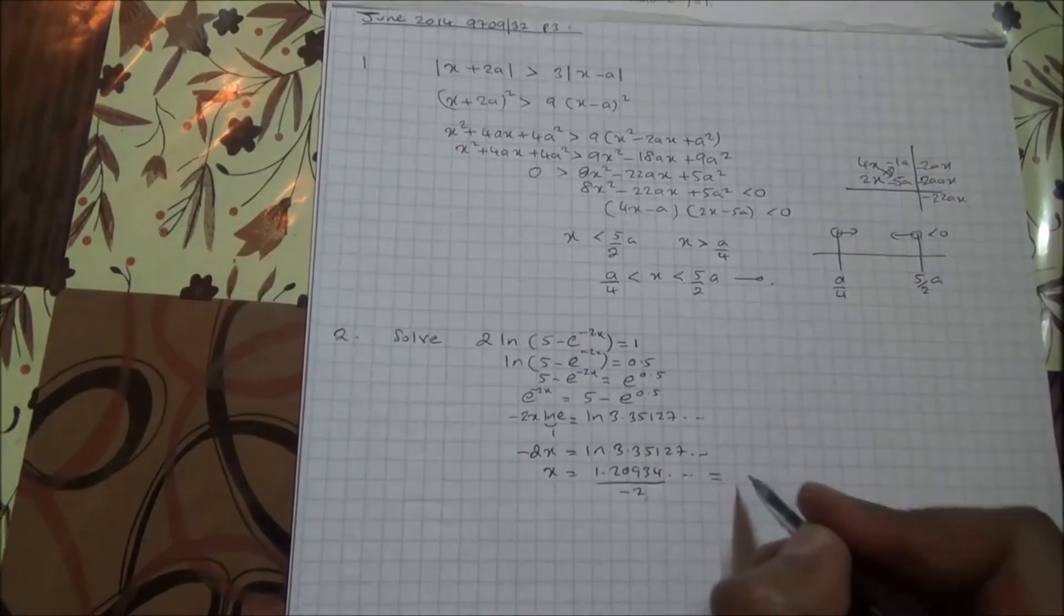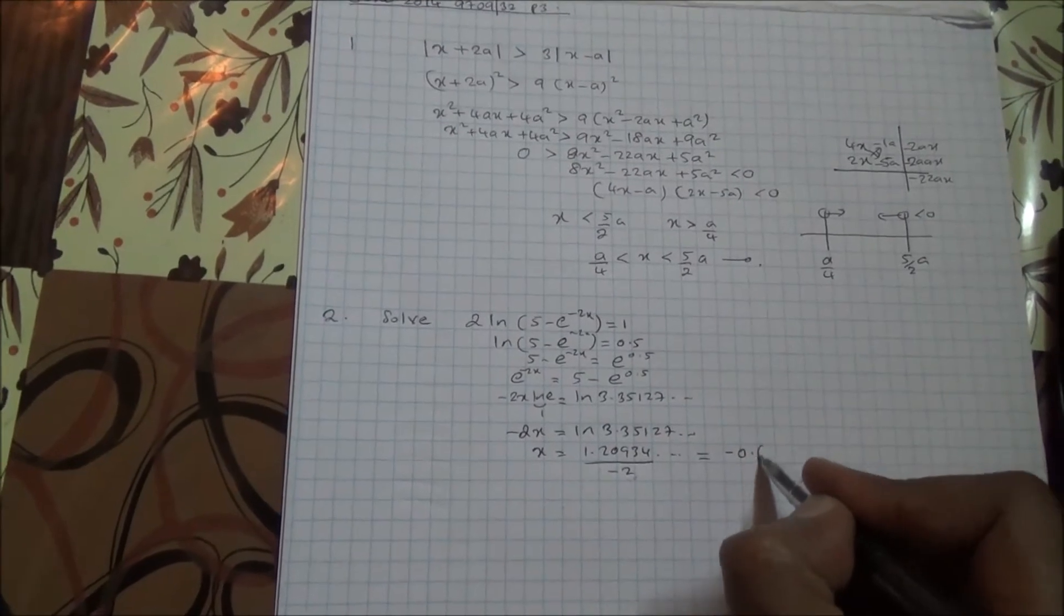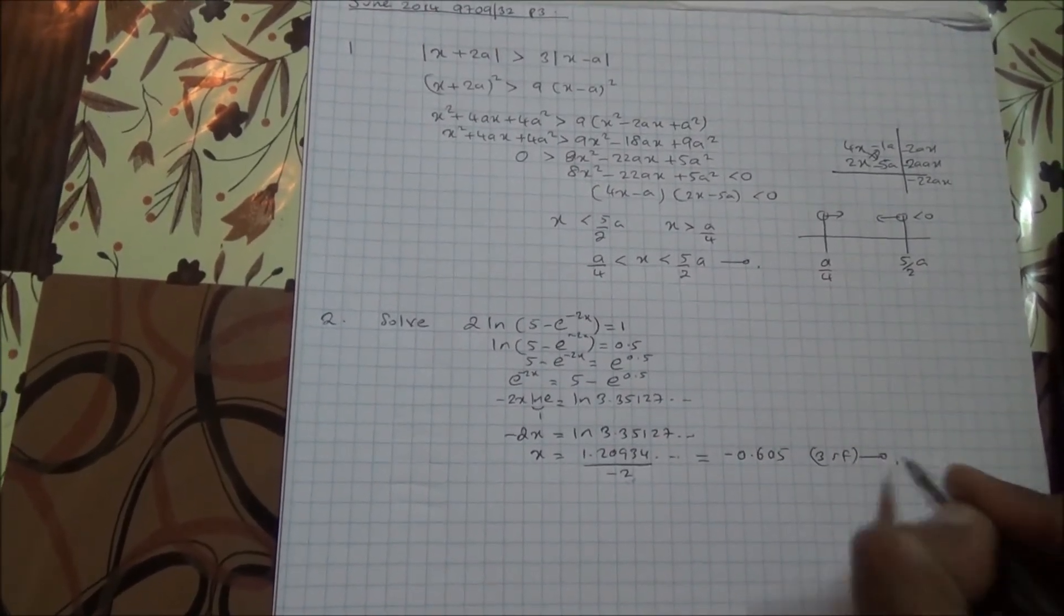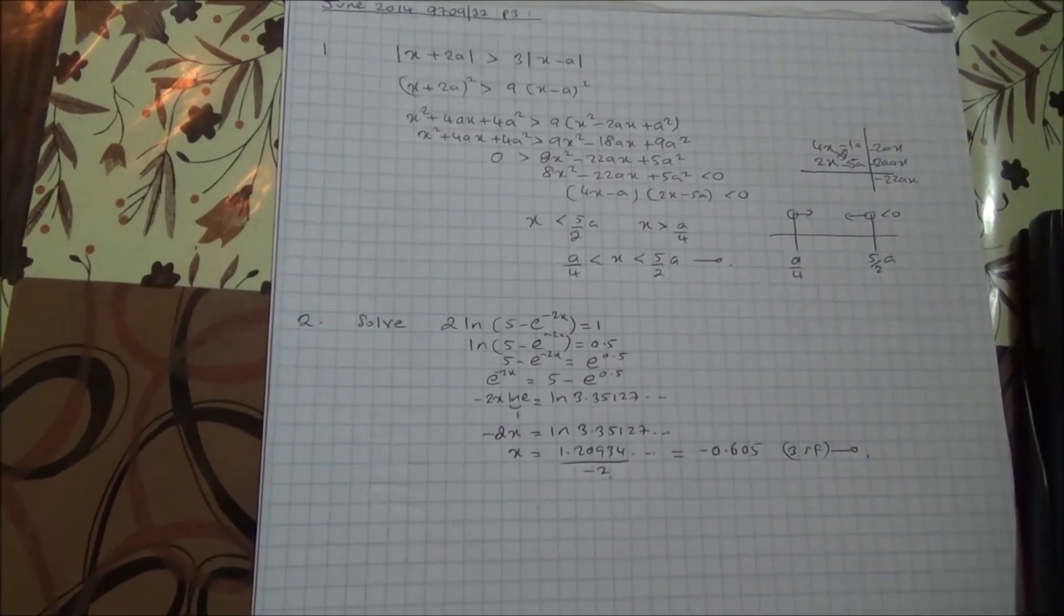Therefore, value of x is going to be minus 0.605 to 3 significant figures. Here we are for the second question. Bye.